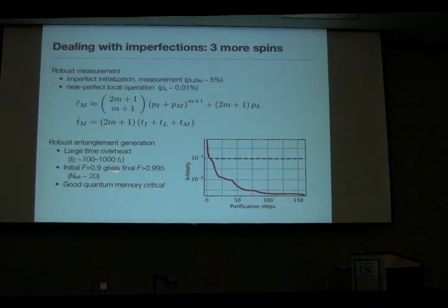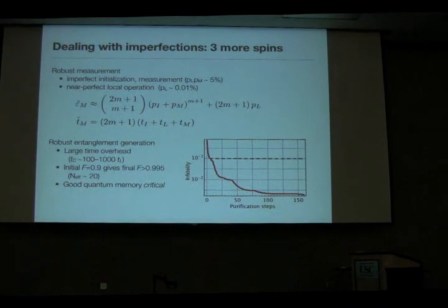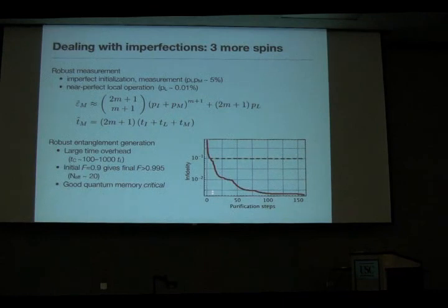At the end of the day, we get some large time overhead in this procedure and we're going to need a very good quantum memory because of it. These numbers are for NV centers, and also quite similar for ions. If my local operation time is one microsecond, my new clock cycle is one millisecond, which tells you that my quantum memory had better be longer than about 10 seconds to do this efficiently. However, the nice news is that in ions, 10-second quantum memories have already been reported.